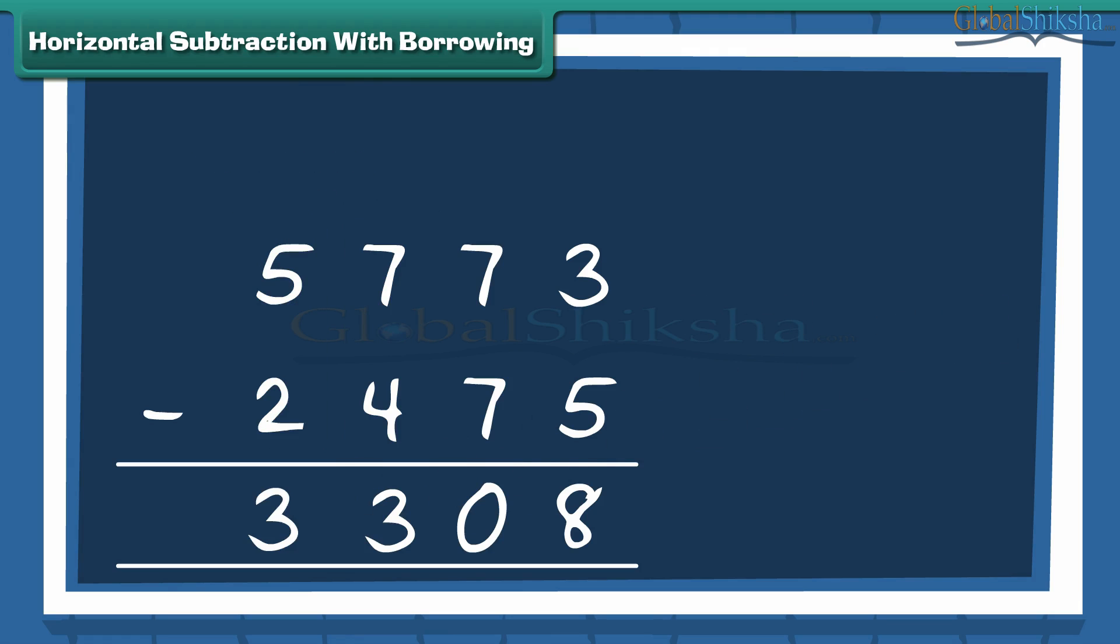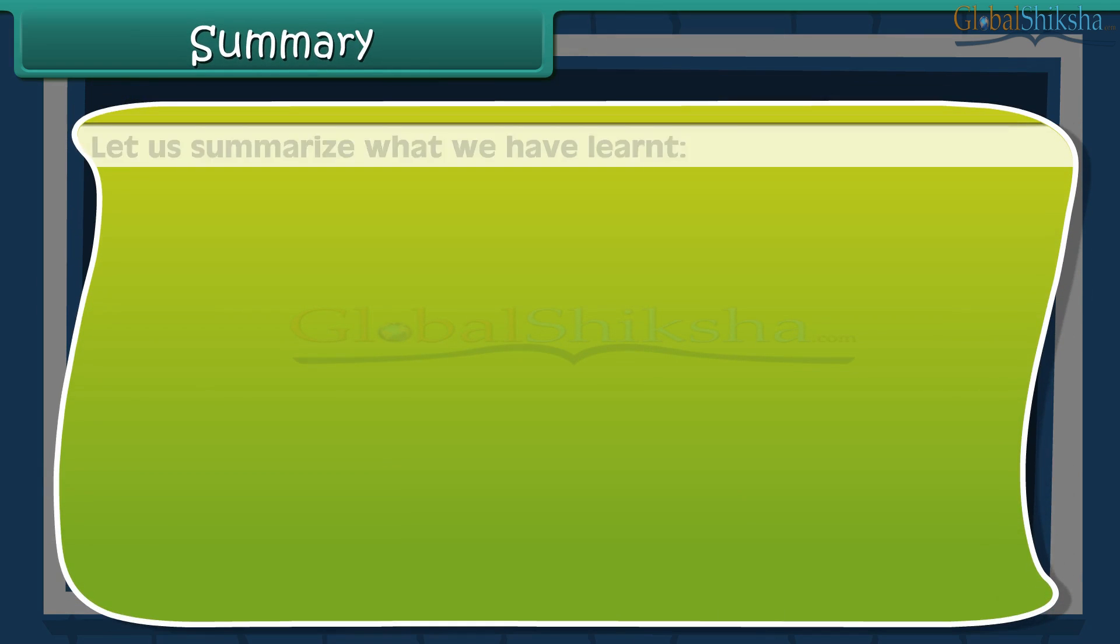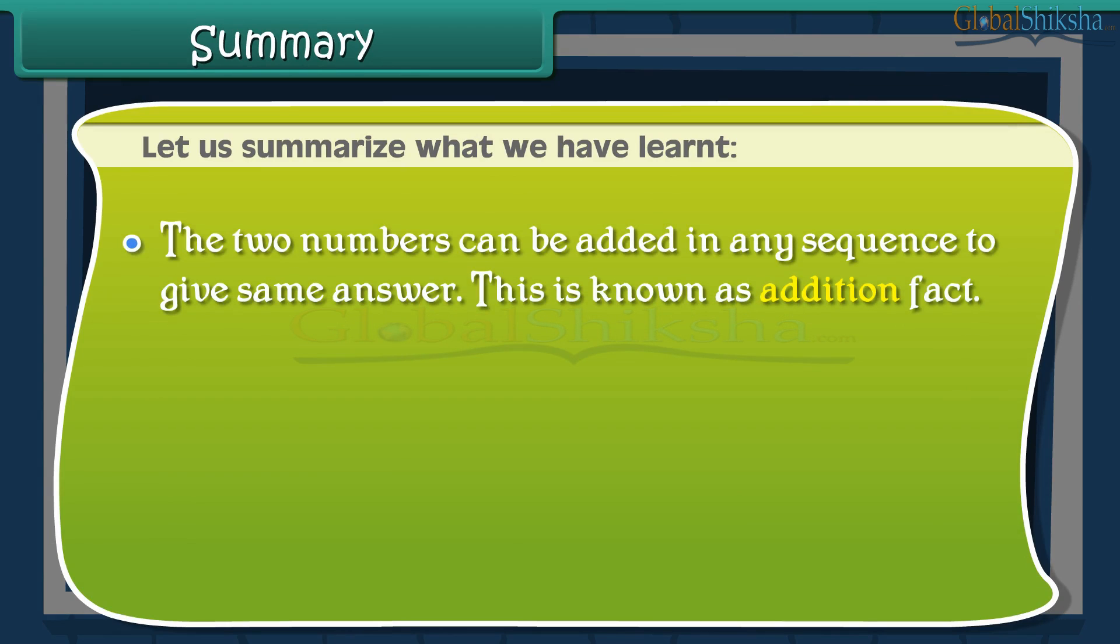Mac, how will we solve this question? It's simple. We start subtraction of numbers at 1's place. Note that you cannot subtract 5 from 3. So, you will borrow 10 from 8 to make 13, and 13 minus 5 is equal to 8.